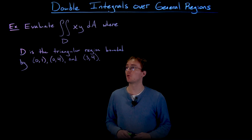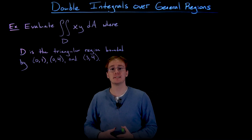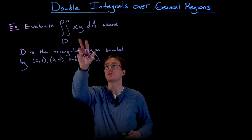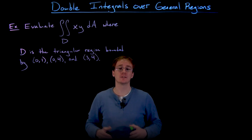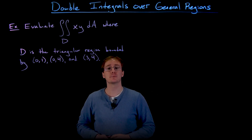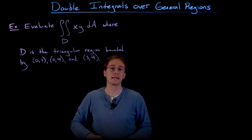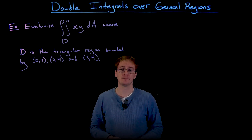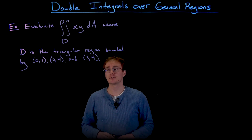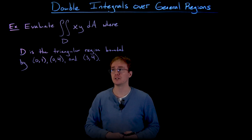Welcome back everyone. In this example we're asked to evaluate the double integral over the region D of the function z equals x times y. Our region D is going to be the triangular region bounded by the three points (0,1), (0,4), and (3,4). In order to express our double integral as an iterated integral, we first need to draw a sketch of our region D.